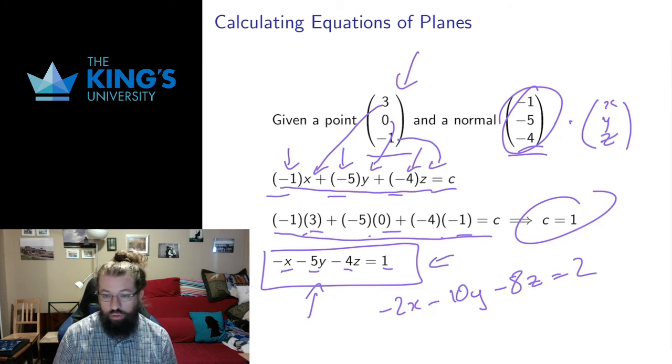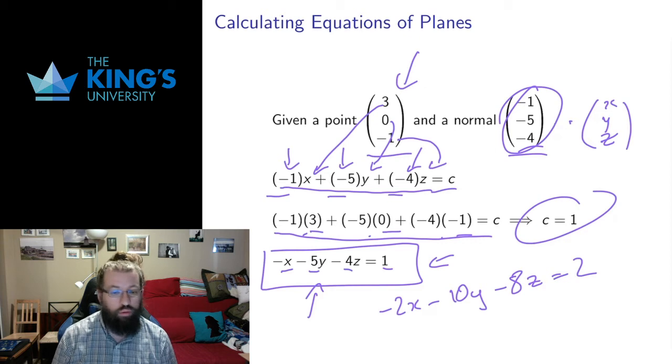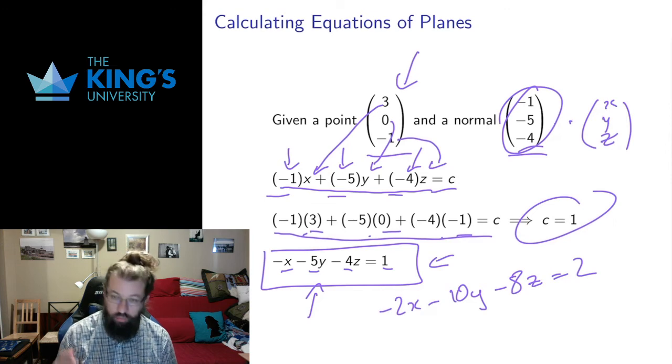It's a good thing to remember if you're doing work with some of your classmates, and you get different equations for planes. They may both be correct if they just differ by multiplication or division by a constant on both sides of the equation. All right, so that's given a point and a normal.